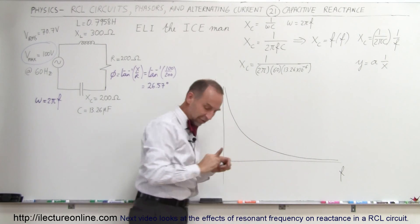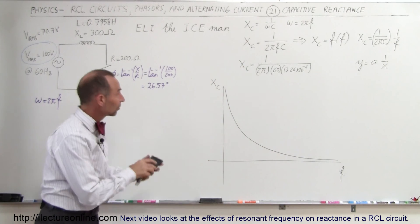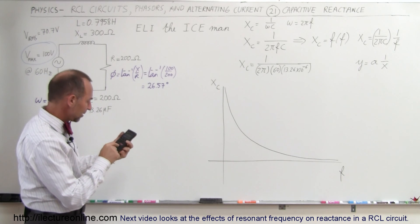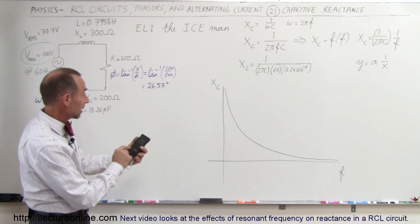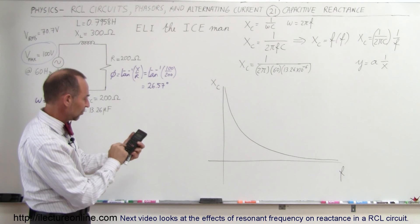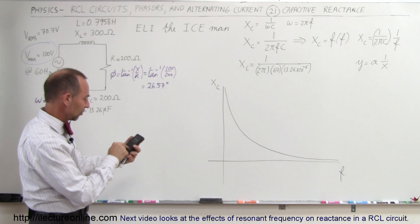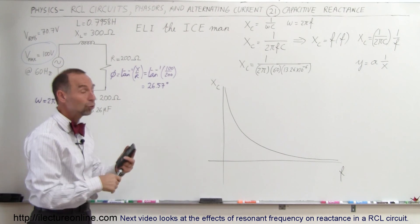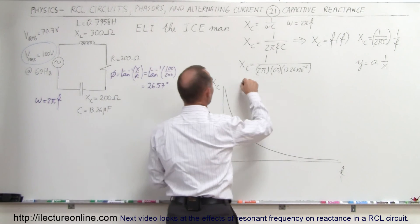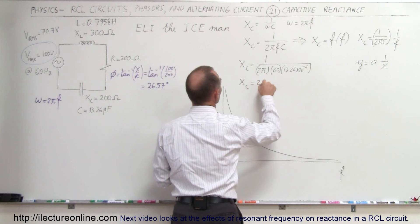That will give us the capacitive reactance. Let's go ahead and do that calculation. Times 60, times 2, times π, take the inverse, and we get 200 ohms. So X_C equals 200 ohms.